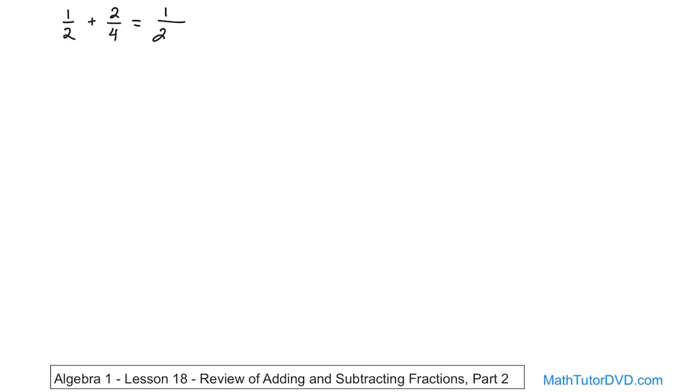So we have one-half. Let's multiply the top by two. We also multiply the bottom by two. That's going to keep things balanced. We're still trying to add the fraction two-fourths.